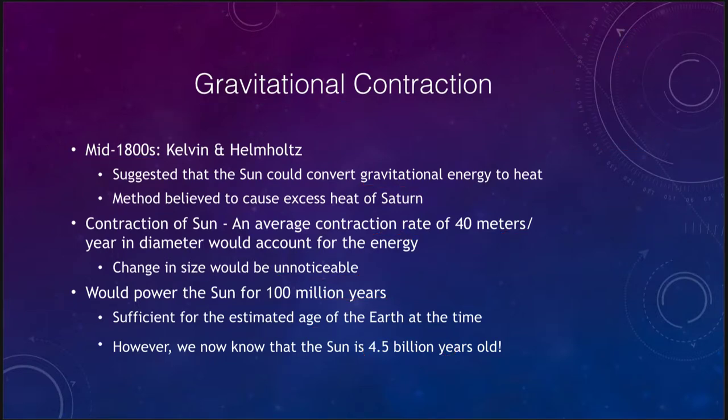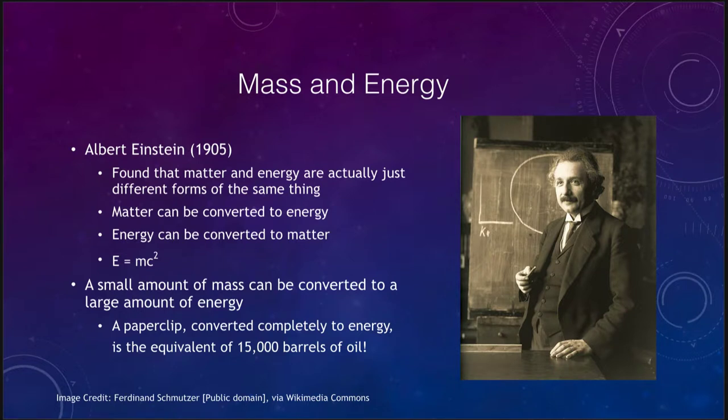To get our understanding of how it produces energy today we can look at what Albert Einstein gave us in 1905. He found that matter and energy are just different forms of the same thing. We have his famous equation E equals MC squared. What that tells us is that we can convert matter to energy and we can convert energy into matter. They are related by just this constant called the speed of light, and the speed of light is a very big number.